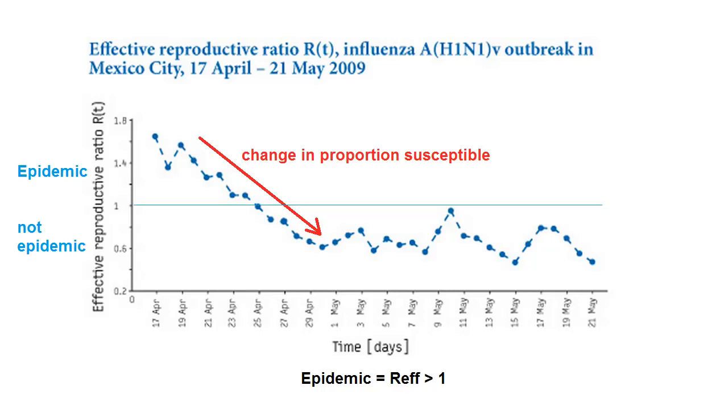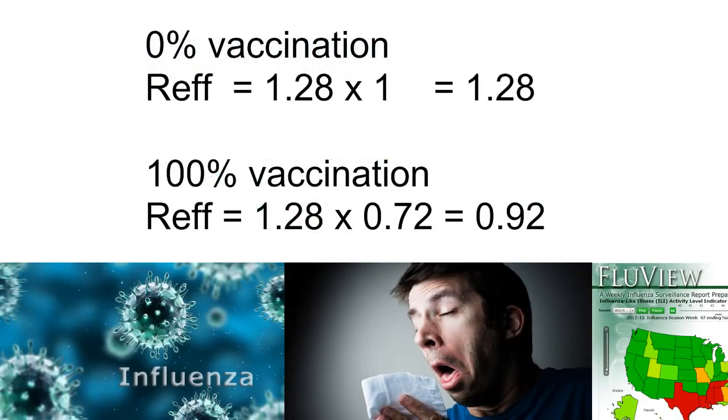that means the proportion of exposures that would be susceptible would be 72%, roughly. Let's plug that into two formulas, one showing 0% vaccination and the other 100% vaccination by a 28% effective flu shot.